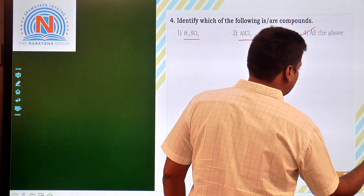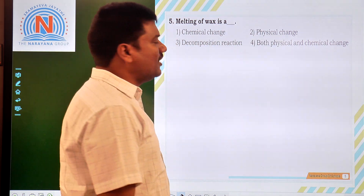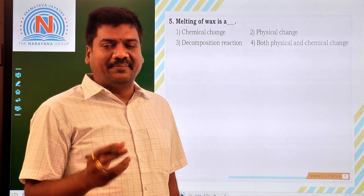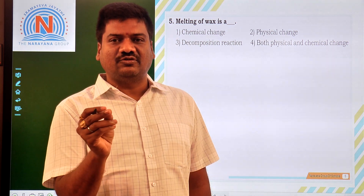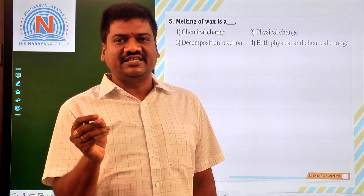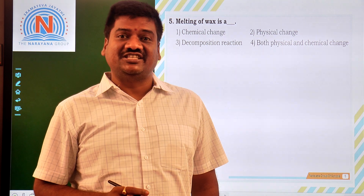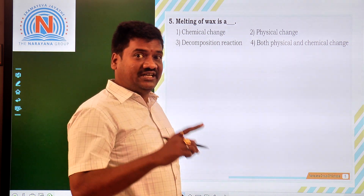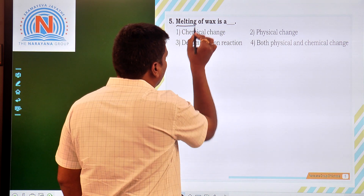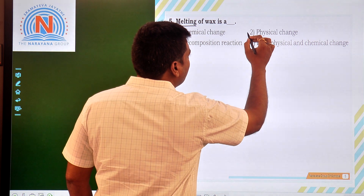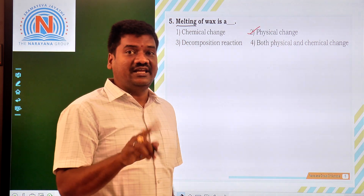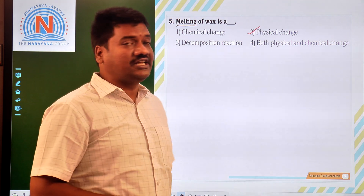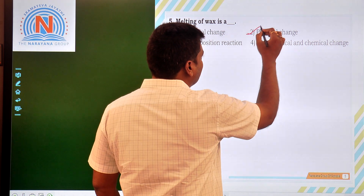The fifth question: melting of waxes. Melting means only the physical state is changing, so it is an example of a physical change. What about chemical change? Burning of waxes is a chemical change. But here they are asking about melting of waxes. Melting is a physical change and burning of waxes is a chemical change. The answer is physical change.